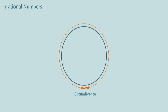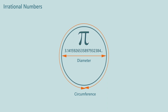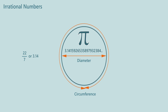Let us take another example of an irrational number. Try dividing the circumference of a circle by its diameter. The answer reads something like 3.1415926535897932384 and it goes on and on forever. The calculation never terminates nor shows any repeating pattern of any sort. This is the number pi, which is an irrational number. But when we find the area or circumference of a circle, we take its value as 22/7 or sometimes 3.14. The ratio 22/7 or 3.14 is just an approximation used for the purpose of calculation, otherwise it would not be possible to calculate the values.